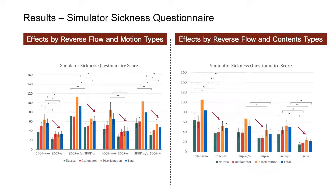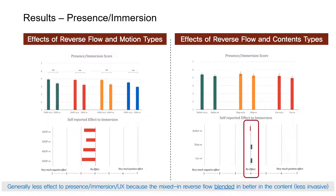Here are the main results. In both experiments, sickness was significantly reduced in most sickness categories for all types of motion and content. On the other hand, presence, immersion, or user experience was reduced significantly in the first experiment, but not so in the second experiment because the mixed-in reverse flow blended in better with the content. Note that in the first experiment with space exploration content, the white reverse flow line segments were much more distinct and eye-catching.